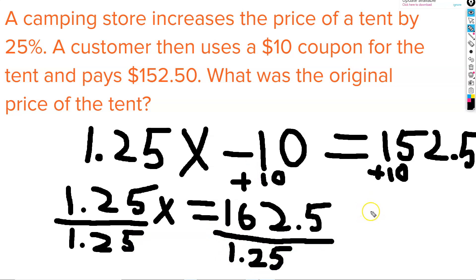This tells us that our x value equals $130. Our x value equaling $130 tells us that the original price of the tent was $130.